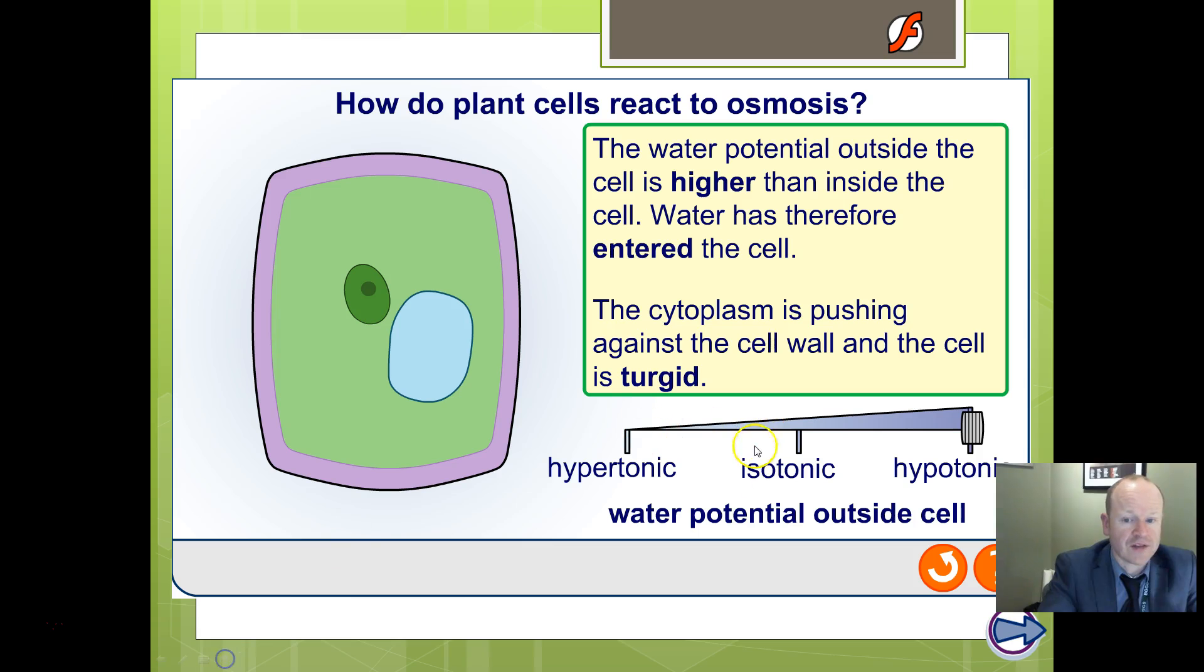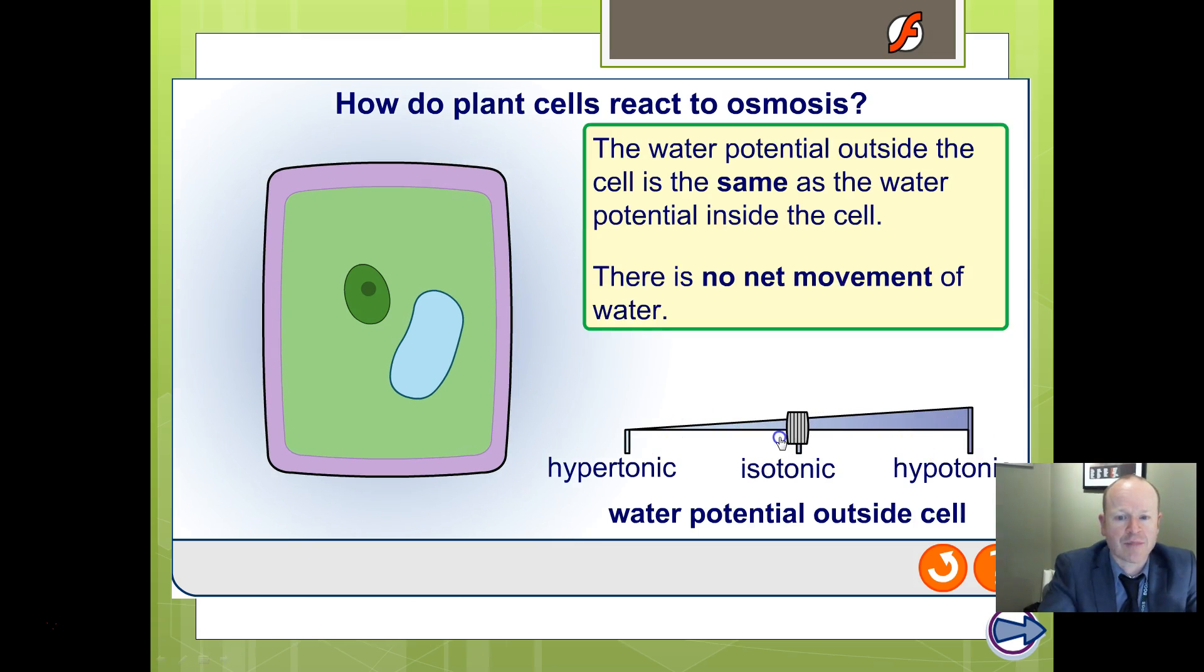So let's think about some examples. We're going to think about plant cells. Three new terms for you here: isotonic, hypotonic, and hypertonic. Isotonic - same water potential. So both inside and outside have same water potential. No net gain of water. Water does not move in or out.